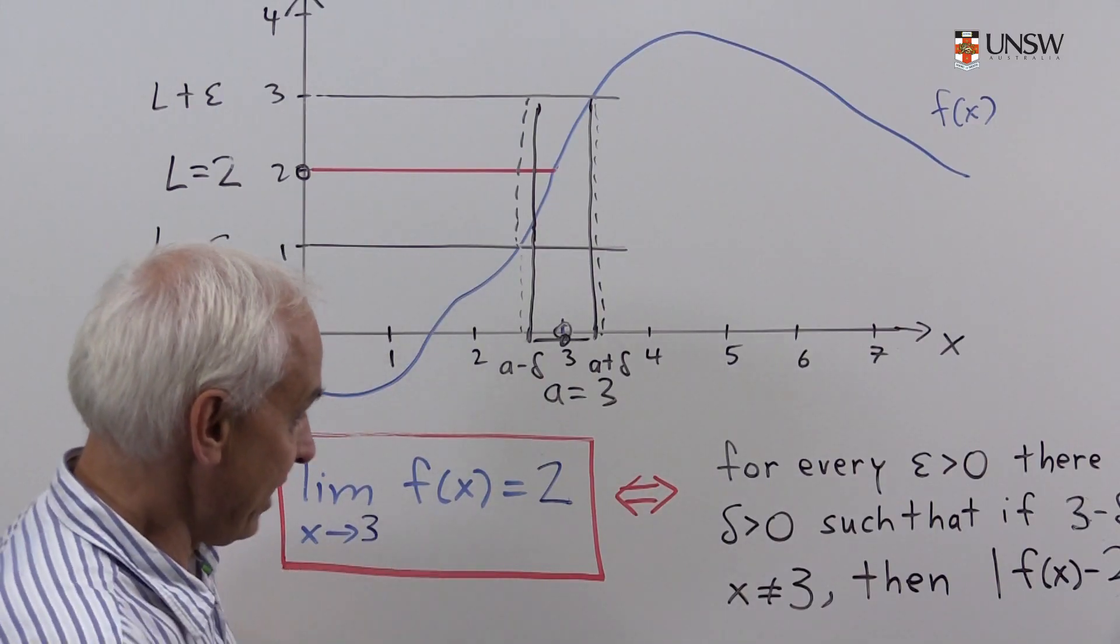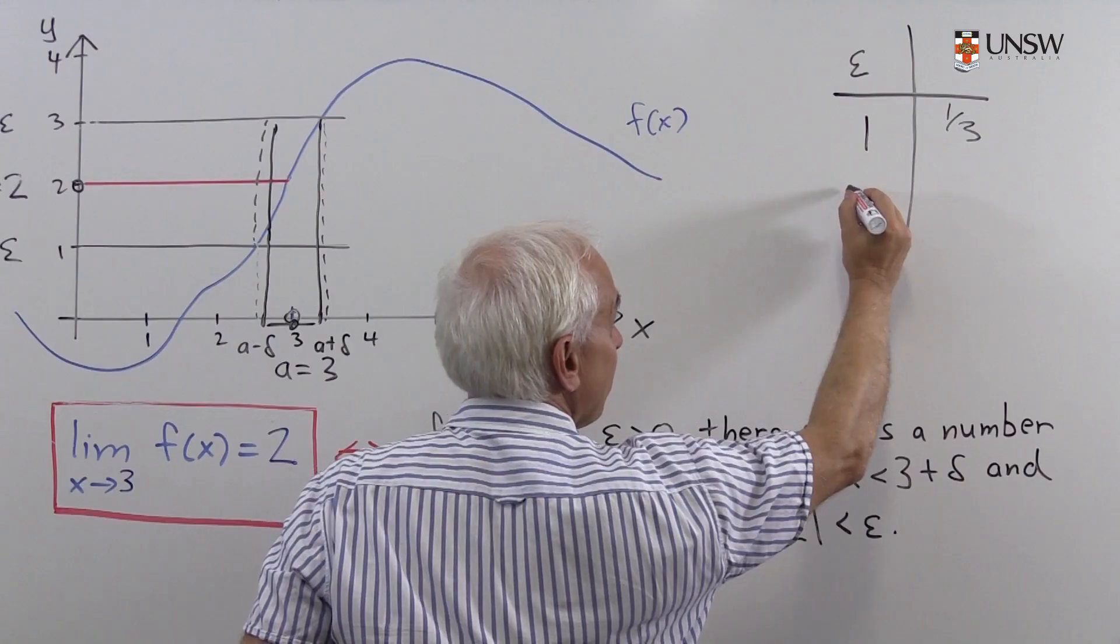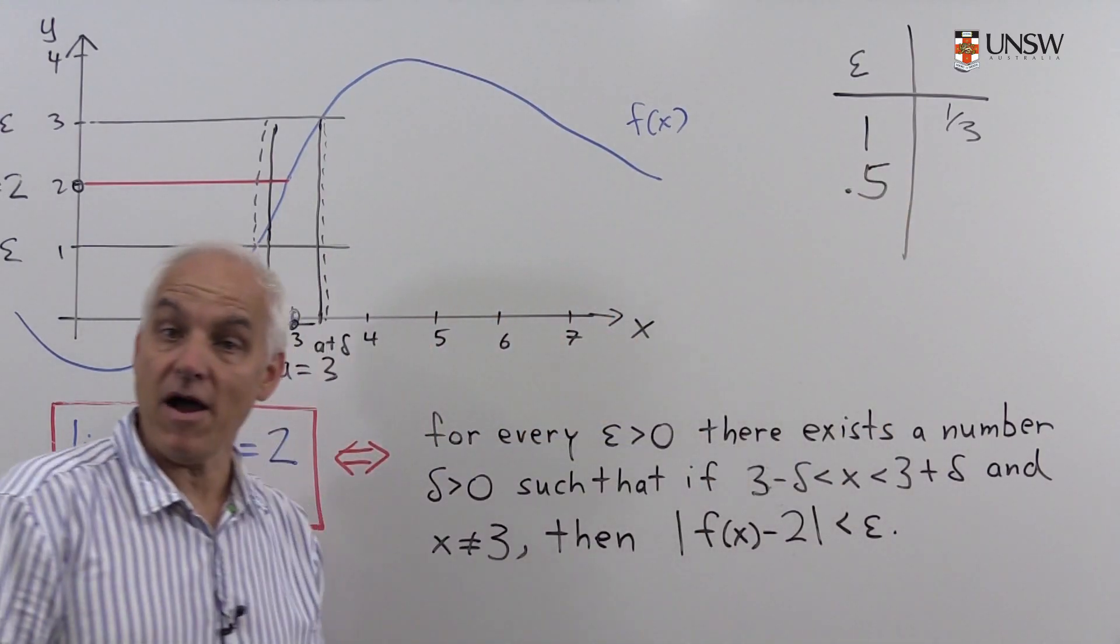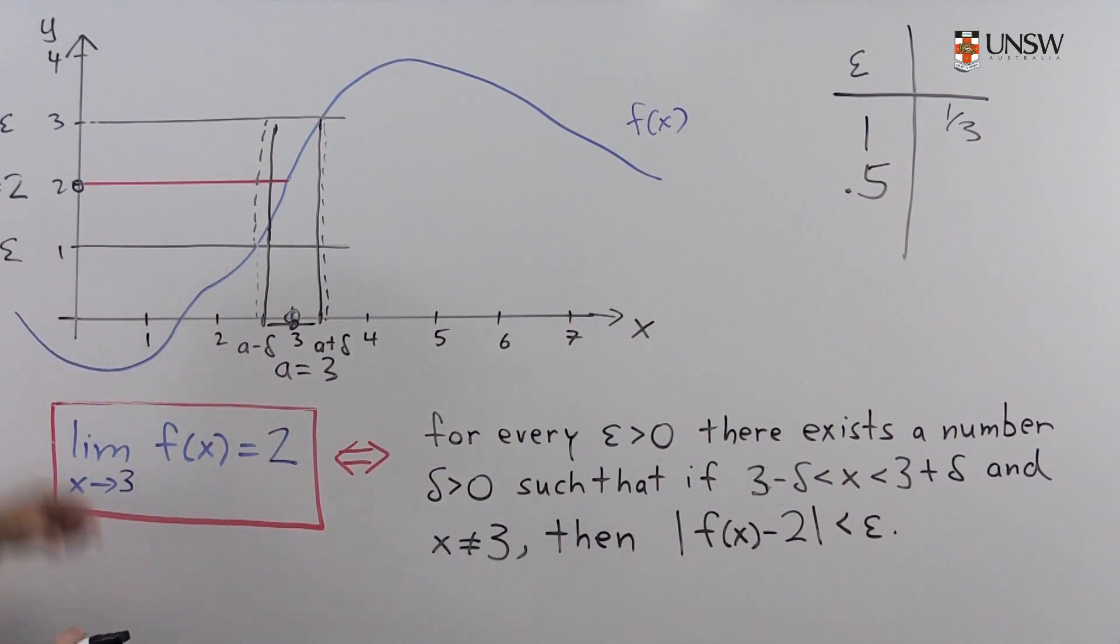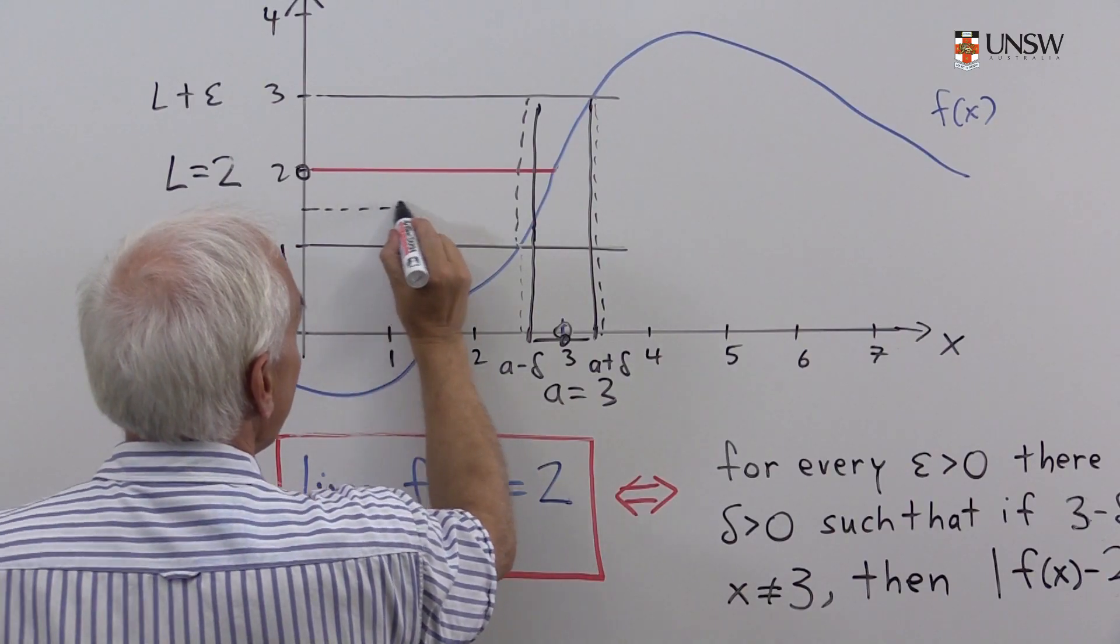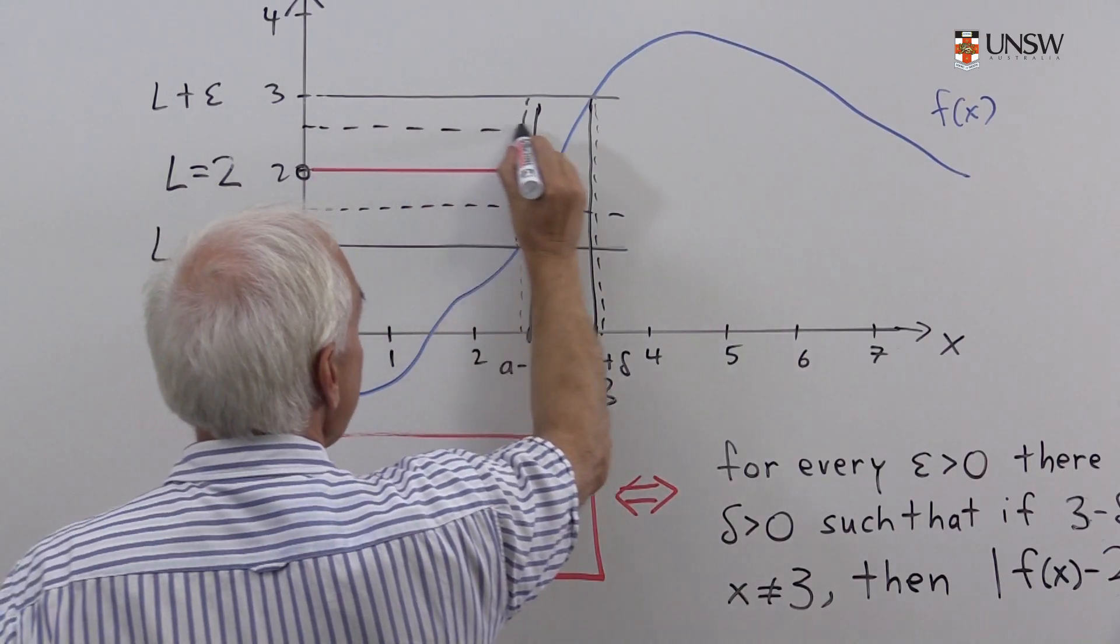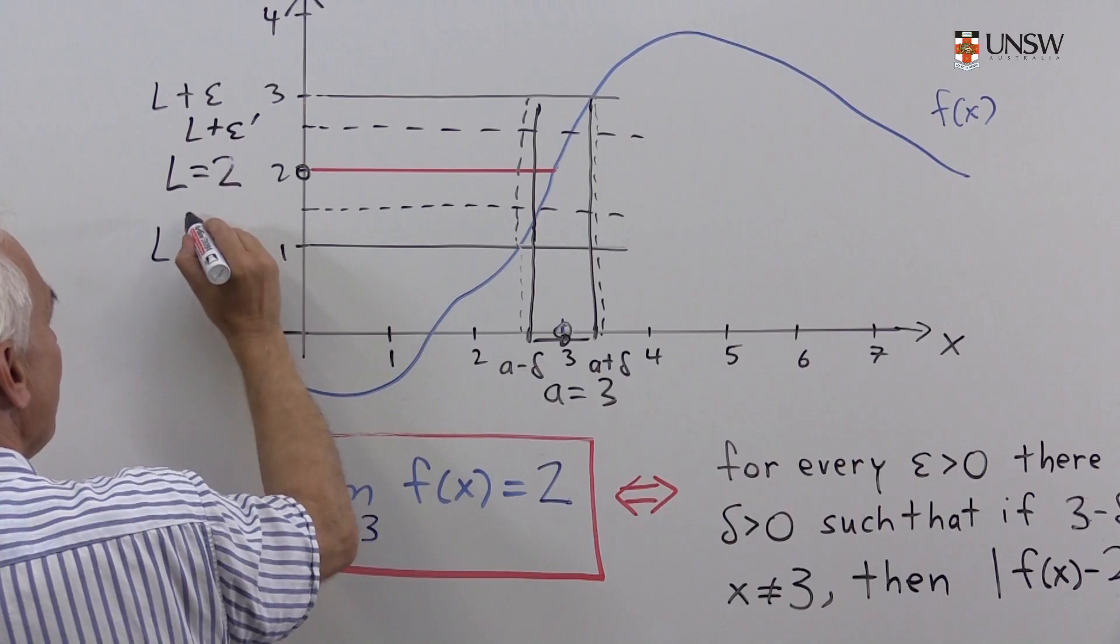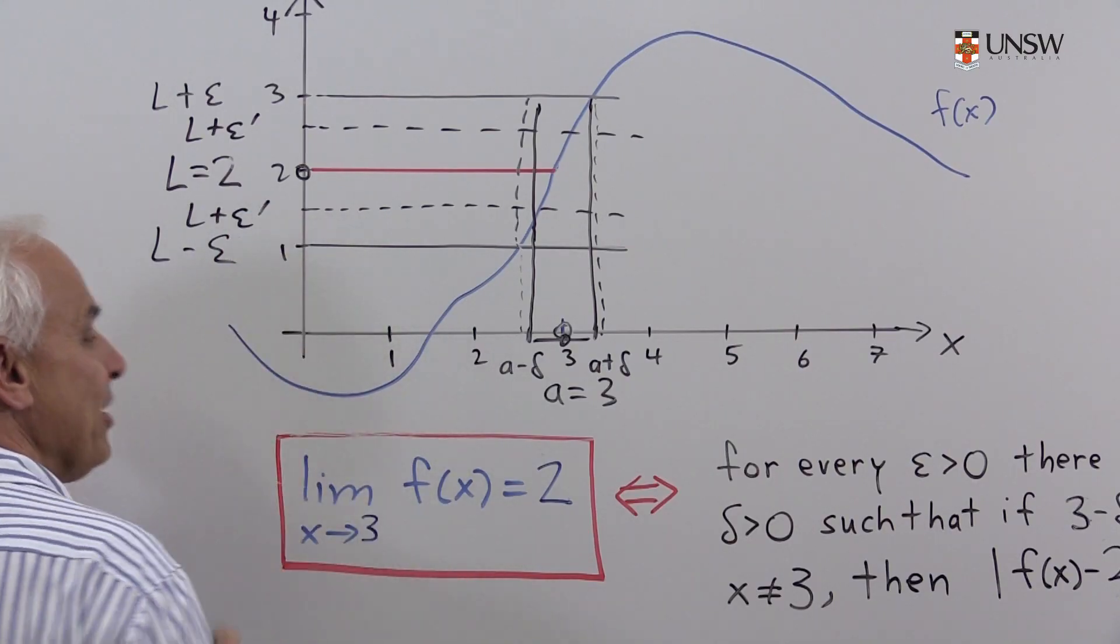But suppose somebody else comes along and says, OK, I want to do something a little bit fancier. Suppose we have an epsilon of 0.5. That means we would be narrowing this band. So let me draw it like that. So that would be the new epsilon. So L plus epsilon prime, the new epsilon, equal to 0.5.